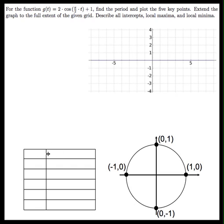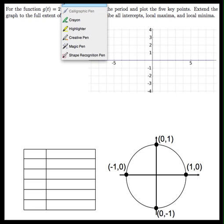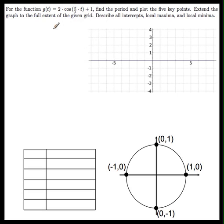And finally, I have a table over here in anticipation of putting some values into that. So we start off by first figuring out the period of our function. The function here is g(t) = 2·cos(π/2·t) + 1.